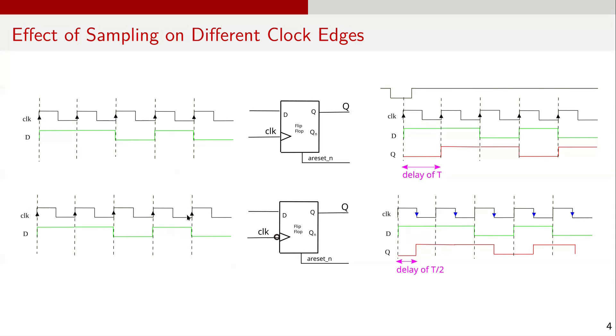In the first circuit, the input to the flip-flop is applied and sampled at the rising edge and the output is delayed by T. In the second circuit, the input to the flip-flop is applied at the rising clock edge but is sampled at the falling clock edge. In this case, the output is delayed by T over 2.